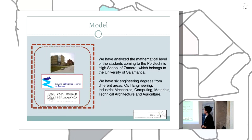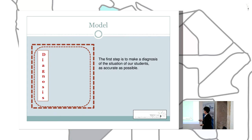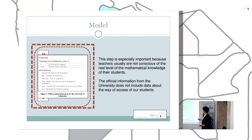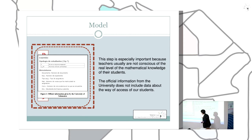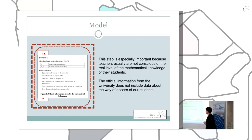We have analyzed the mathematical level of students coming to the Polytechnic High School at the University of Salamanca, looking at six engineering degrees from different areas. The first step is always to make a diagnosis of the students' situation, and this diagnosis should be as accurate as possible. This step is very important because, as teachers, we don't have information about how our students entered university. The information provided by the university only indicates the type of students, their number, and subject, but does not include data about the way of access.